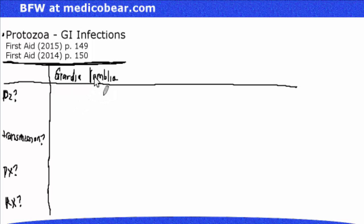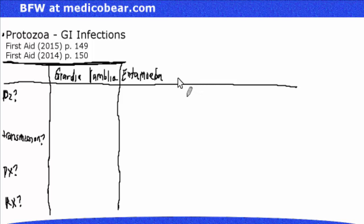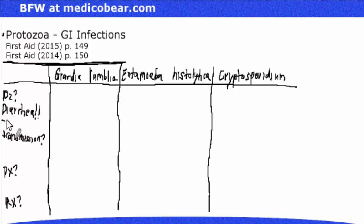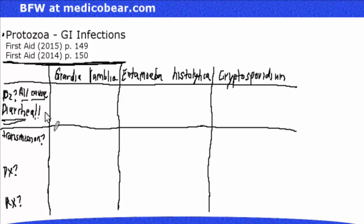When I say Giardia lamblia, you should be thinking about diarrhea. When I say Entamoeba histolytica, you better be thinking about diarrhea. When I say Cryptosporidium, abbreviated as Crypto, you better be thinking about diarrhea. These are three protozoans that all cause diarrhea. What the medical student needs to be able to do is distinguish these different types of protozoa from each other based upon the types of diarrhea that they form.